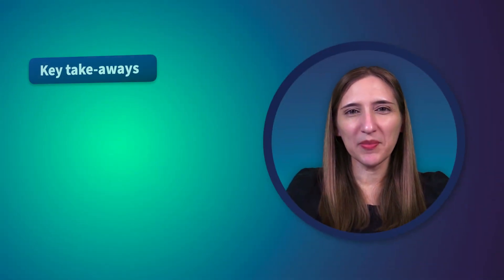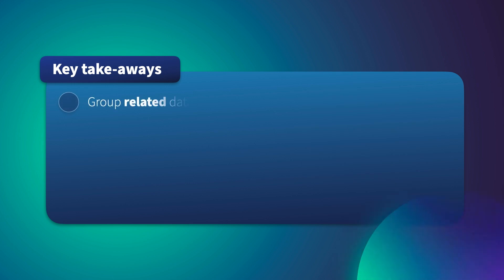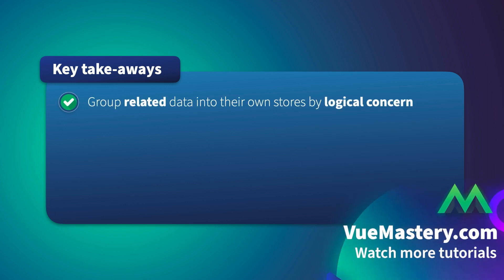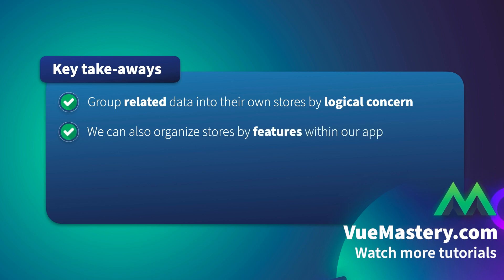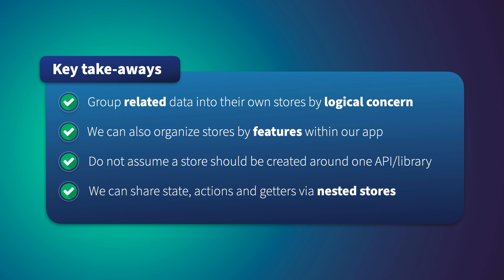And with that, we've come to the end of the lesson. The key takeaways are: group related data into their own stores by logical concern. We can also organize stores by features within our app. Do not assume a store should be created around one API or library. We can share state, actions, and getters via nested stores. In the next lesson, we'll learn about accessing our Pinia state.